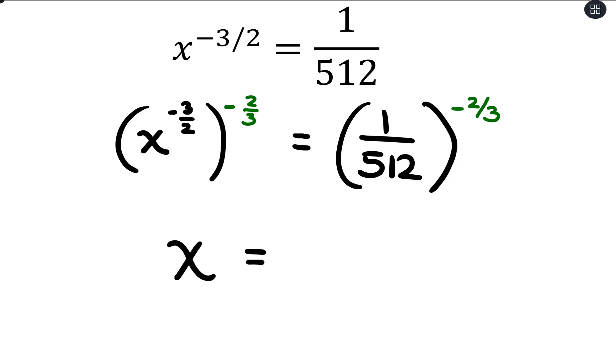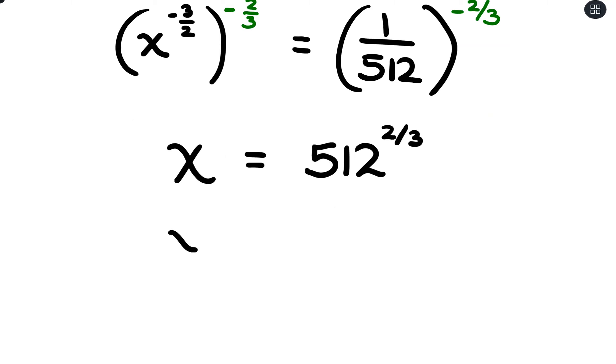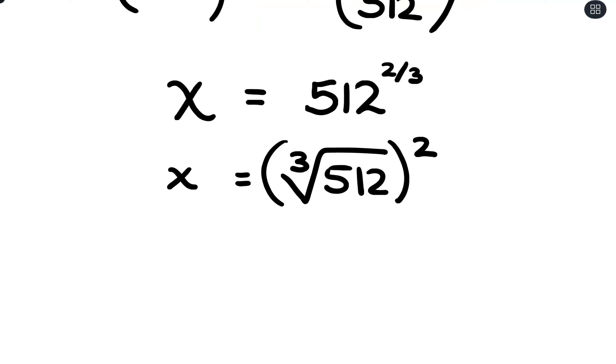And then on the other side of the equation, I'm raising this to the negative 2 thirds. And what I could do is to take care of that negative is flip the fraction. So where it's 1 over 512, now it'll be 512 over 1 raised to the positive 2 thirds. And that would be the 3rd root of 512 and then squaring all of that. The cube root of 512 should be 8. So this is 8 squared, which is 64.